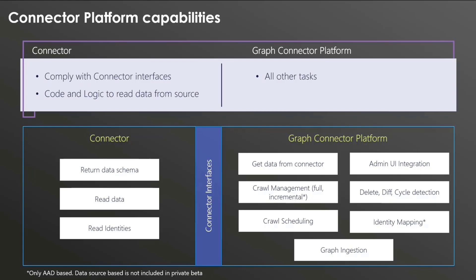The platform also handles delete detection, difference detection, cycle detection, identity mapping, and Graph ingestion — essentially everything is taken care of by the connector platform. The only thing we expect from you when developing your custom connector is to tell us how to read from the data source, how to read the identities, and what the data source schema is. We are abstracting all these capabilities that you might have had to write on your own.